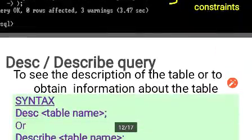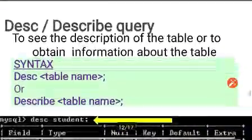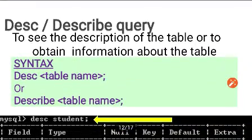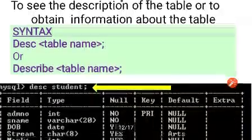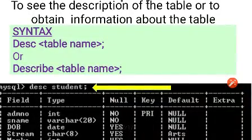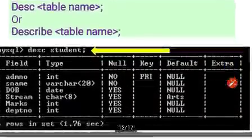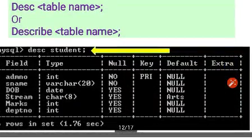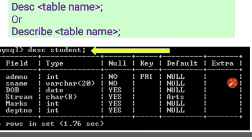To describe a table, the syntax is DESC followed by the table name. Writing DESC student displays the full structure of the student table, showing all column names, data types, nullability, keys, and default values.